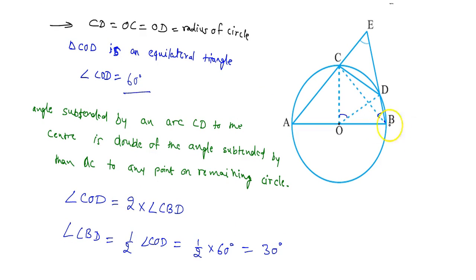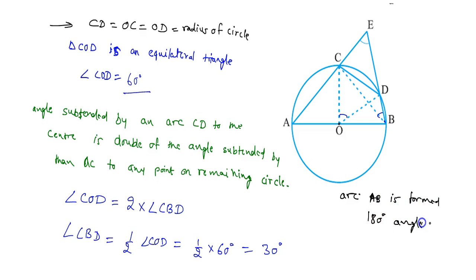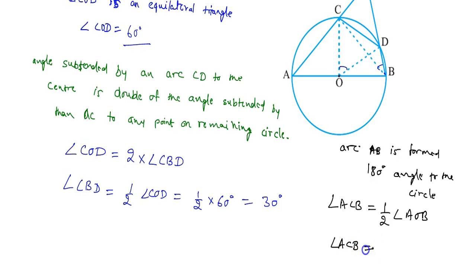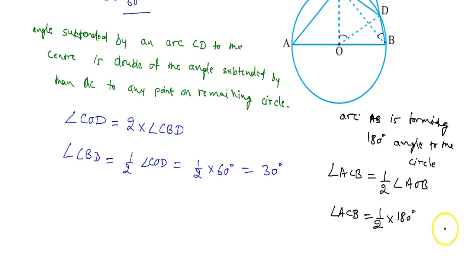Now we apply the same theorem for arc AB. Since arc AB subtends a 180-degree angle at the center, angle ACB equals half of angle AOB, so angle ACB equals one-half of 180 degrees, which gives angle ACB equals 90 degrees.